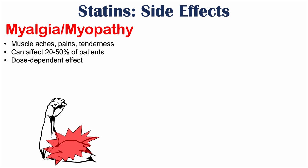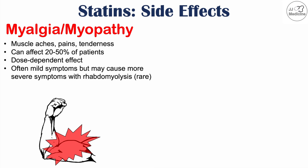This is a dose-dependent effect — the higher the dose of statin, the more likely and more severe these myalgia symptoms will be. Most of the time symptoms are mild, but rhabdomyolysis — actual muscle breakdown — can occur rarely. This is seen in blood work as increased creatine kinase levels, and if untreated, can lead to kidney issues as well.